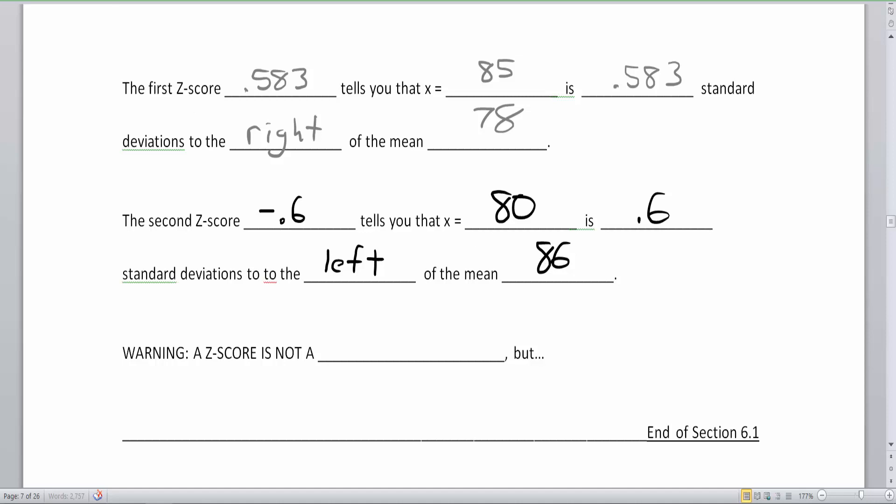But I wouldn't want to put negative 0.6 to the left, because then I would be moving to the right, double negative, of the mean 86. So in this case, my z-score was negative, because my test score was below the average. Now, for red emphasis here, a z-score is not a percentage. Okay, a z-score is not a percentage. I know you might see the 0.583 and think it's 58.3%, and the z-score here is negative 0.6 and think it's negative 60%, but it's not a percentage.